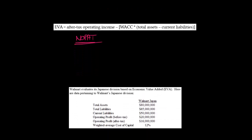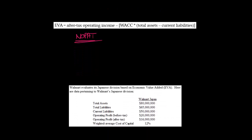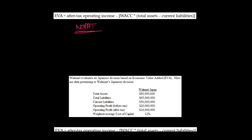Let's pretend that Walmart evaluates its Japan division based on EVA. Here are some data for Walmart's Japanese division: total assets, total liabilities, current liabilities, operating profit before and after tax, and the weighted average cost of capital. You're not going to need all of this information — I'm just presenting it so we can see what's pertinent.